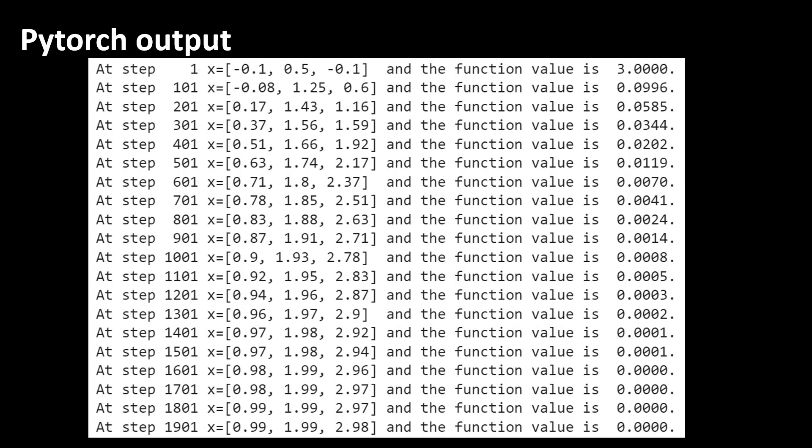The output is this printout. As you can see as the number of steps increases x gets closer and closer to 1, 2, 3 and the objective value decreases.